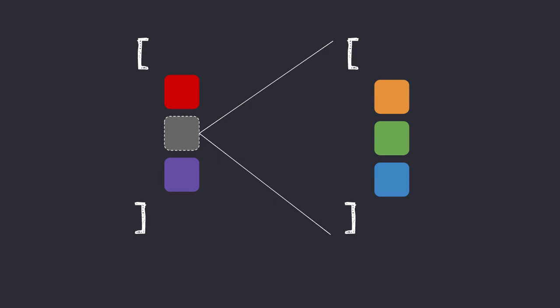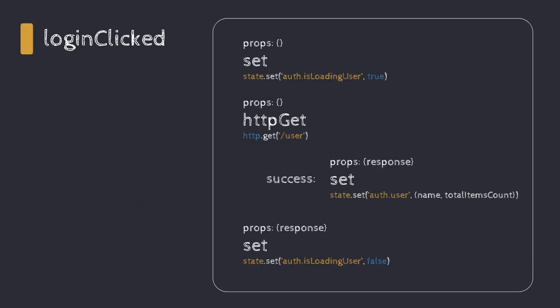Even though this functional composition gives us an abstraction that binds all our code together as blocks of Lego, the greatest benefit is that Cerebral understands this composition. It even understands when state changes are made and side effects are run.